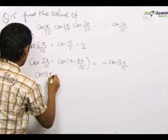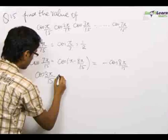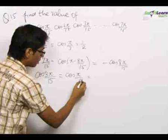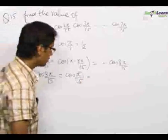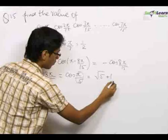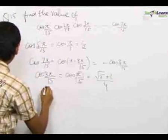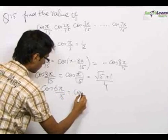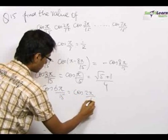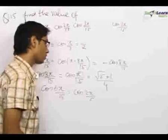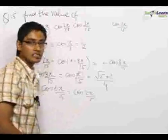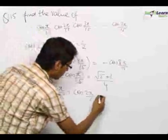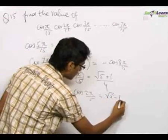Then we convert cos(3π/15) as cos(π/5). We know that this is 36 degrees, and the value of cos(36°) is (√5 + 1)/4. Then we convert cos(6π/15) as cos(2π/5). We know this is cos(72°), and cos(72°) = cos(90° − 18°) = sin(18°) = (√5 − 1)/4.